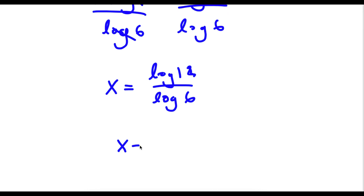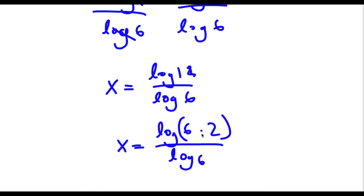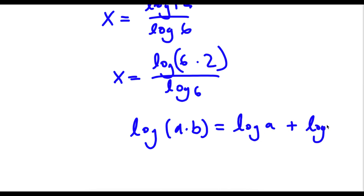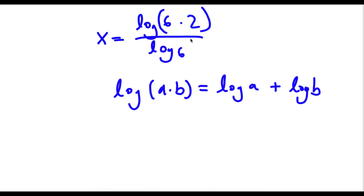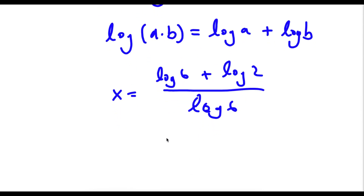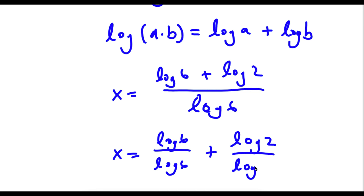Now log 12 is the same thing as log of 6 times 2, and I have this over log 6. Using the product rule of logarithms, log of 6 times 2 equals log 6 plus log 2. So I have log 6 plus log 2, all over log 6. This is the same thing as log 6 over log 6 plus log 2 over log 6.